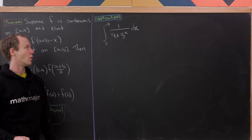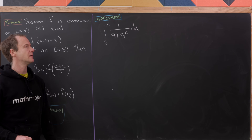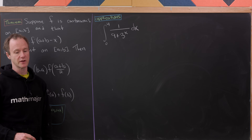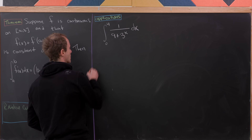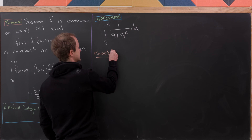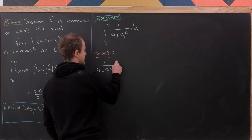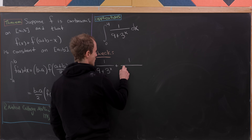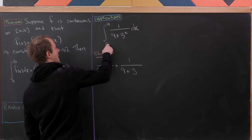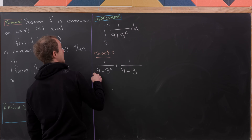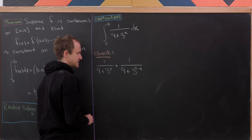For the next example, we look at the integral from 0 to 4 of 1/(9 + 3^x) dx. Without this trick, this would be doable but a little tricky. We first check the hypothesis by examining 1/(9 + 3^x) + 1/(9 + 3^(4 + 0 - x)), i.e., 1/(9 + 3^x) + 1/(9 + 3^(4 - x)).